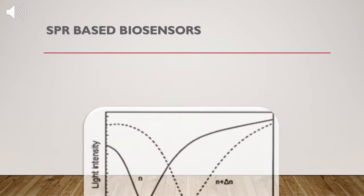For example, in SPR sensors with angle modulation, a monochromatic light wave with variable angle of incidence is used to excite surface plasmons.